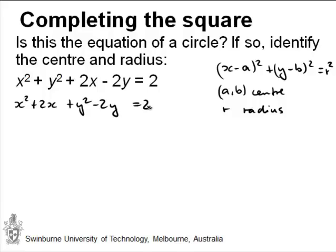So I've just rearranged this a little bit. Now the x squared plus 2x I can do something with. I can write this as x squared plus 2 times x times 1, and then I can write plus 1 squared minus 1 squared, meaning I'm adding and subtracting 1, which means I haven't made any change.